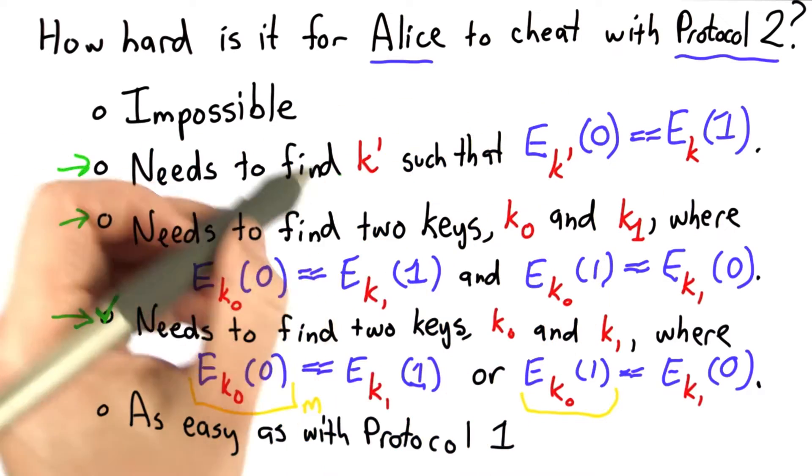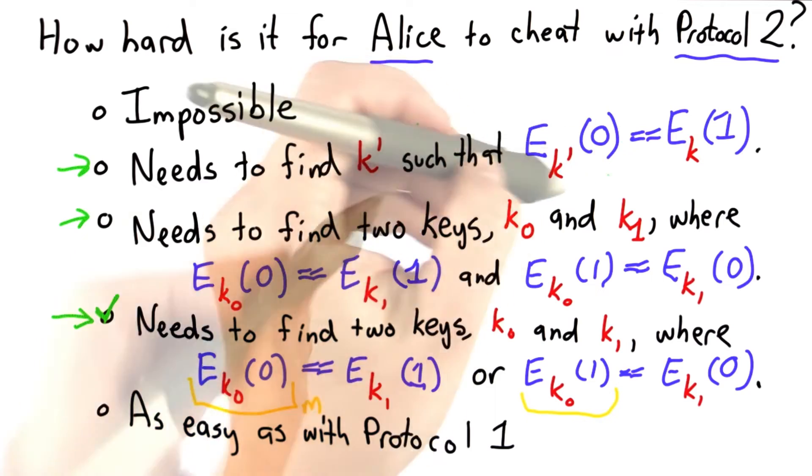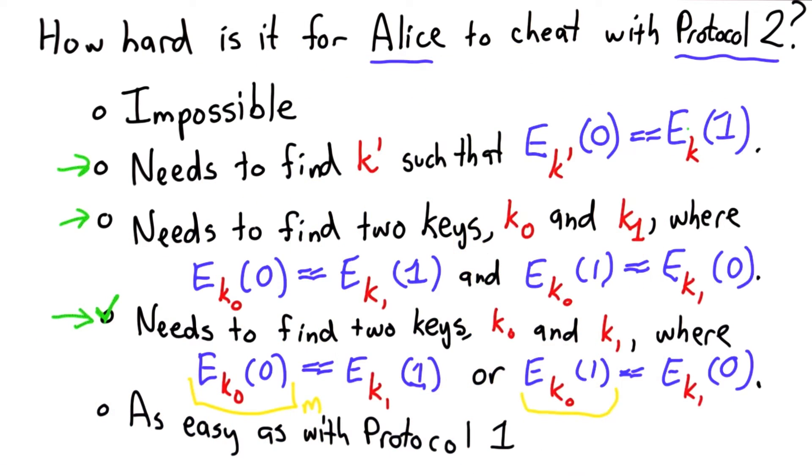If she could find a key that has this property, that for whatever key she happened to pick, encrypt 0 to the same thing that key encrypted 1 to, well that would allow her to cheat just as well.